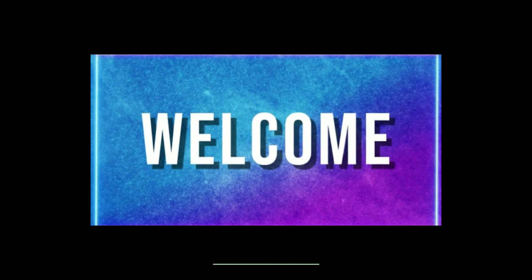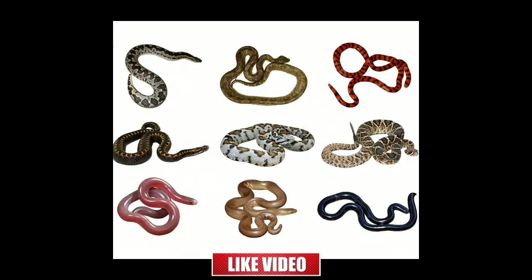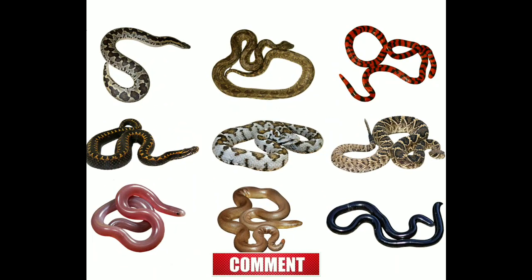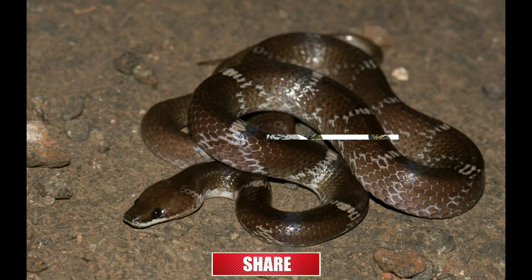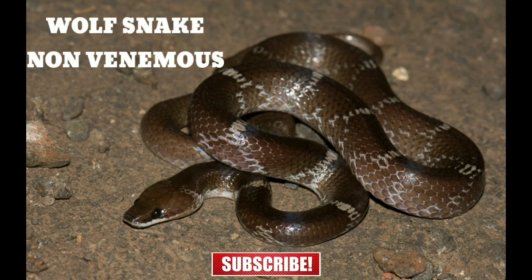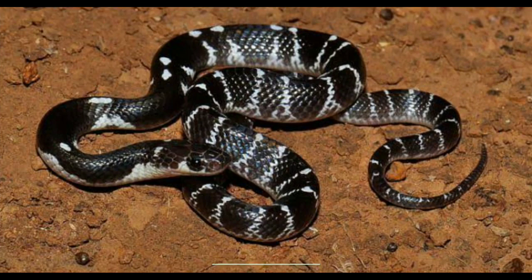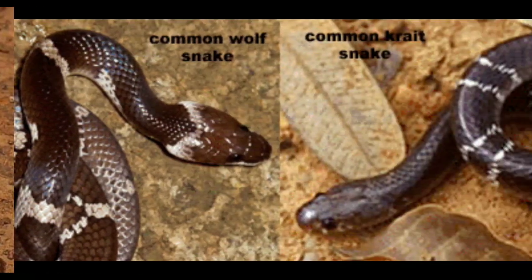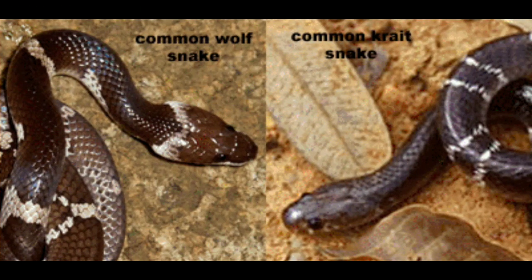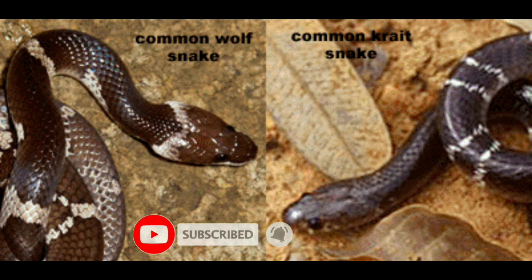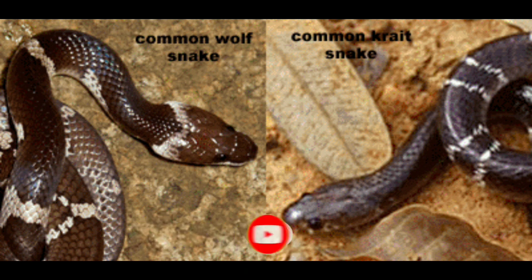Welcome to one more video about venomous and non-venomous snakes. Today we will have a look at the difference between the wolf snake, which is non-venomous, and the common krait, which is venomous. When we look at these two snakes, it is difficult to identify which is the wolf snake and which is the common krait because both have almost the same physical characteristics.